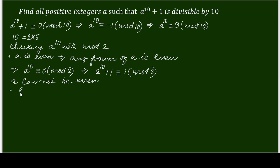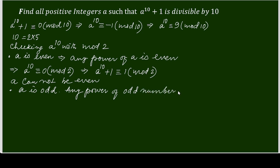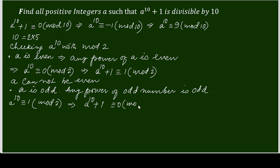That means a must be odd. Any power of an odd number is odd, so a to the power 10 is congruent to 1 modulo 2. Therefore a to the power 10 plus 1 is certainly divisible by 2. This is verified — a must be odd.